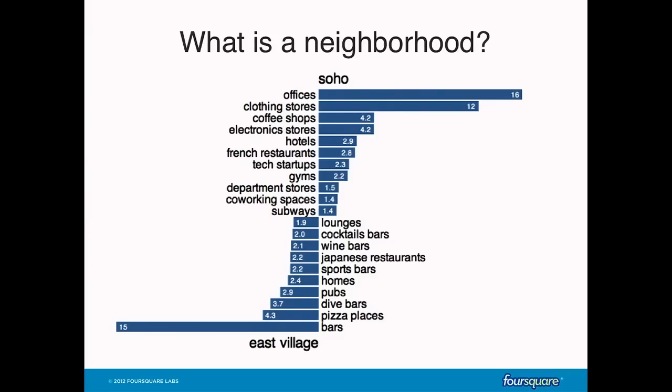We can also use this data to better understand what neighborhoods are. Here I've plotted the activity distribution for two famous New York neighborhoods: Soho and the East Village. The percentage shown is how much it deviates from the average New York neighborhood. In Soho, people typically check in more to offices, clothing stores, and coffee shops. In the East Village, people check in more to bars, pizza places, dive bars, pubs, sports bars, wine bars, cocktail bars, and lounges.